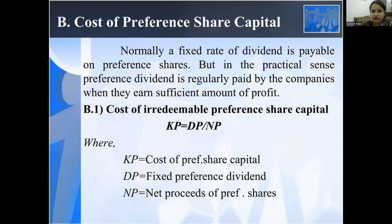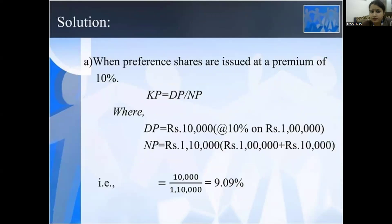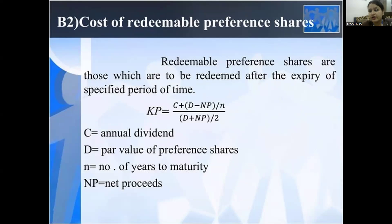Cost of preference share capital: normally a fixed rate of dividend is payable on preference shares, but in a practical sense, preference dividend is regularly paid by companies when they earn a sufficient amount of profit. Cost of irredeemable preference shares capital: KP equals DP divided by NP, where KP is the cost of preference share capital, DP is the fixed preferential dividend, and NP is the net proceeds of preferential capital. Cost of redeemable preference shares: redeemable preference shares are those which are redeemed after the expiry of a specific period of time. KP equals (C plus D minus NP) divided by N, divided by (D plus NP) divided by 2, where C is the annual dividend, D is the par value of the preferential shares, N is the number of years to maturity, and NP is the net proceeds.